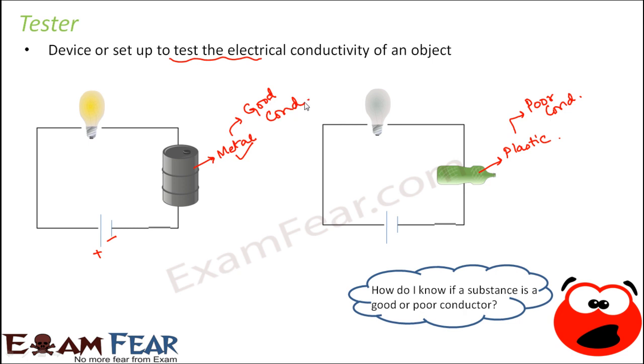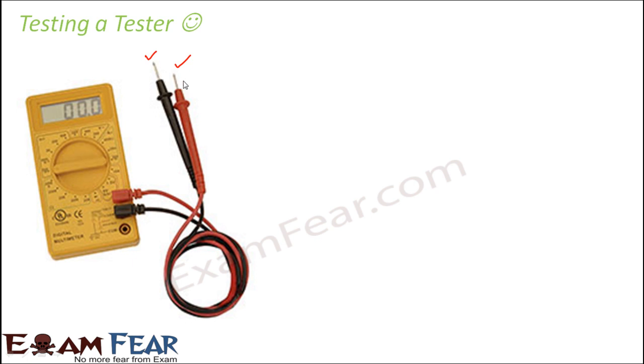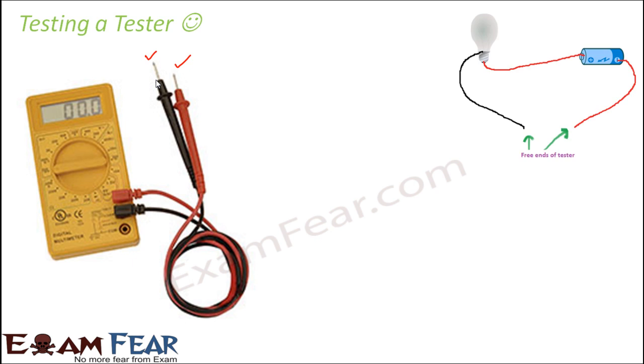This simple circuit with a bulb and a battery can be your tester. In your laboratories, you would have seen multimeters, which are used for multiple purposes like measuring current and voltage, but they can also act as a tester. A multimeter has two leads — a red and a black lead — as free ends, and you connect these free ends to whatever substance you want to test.